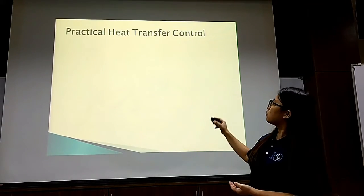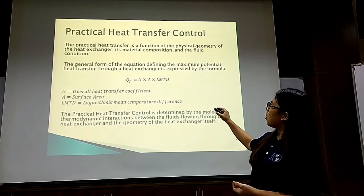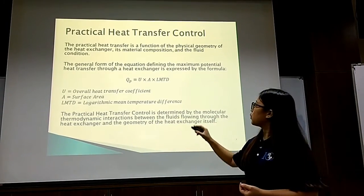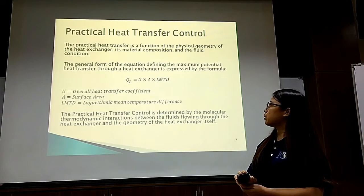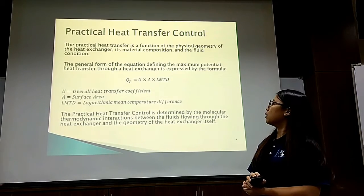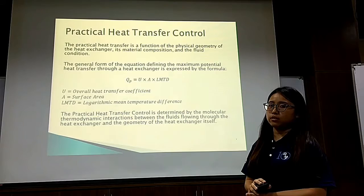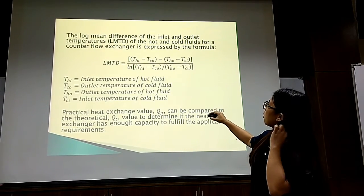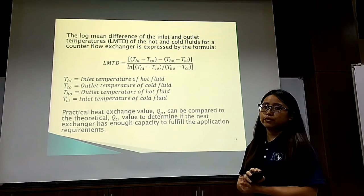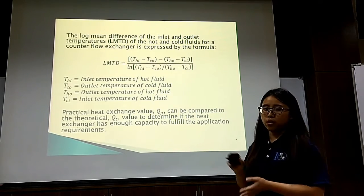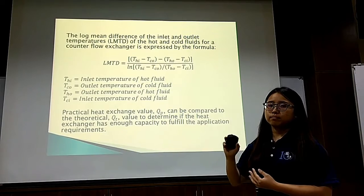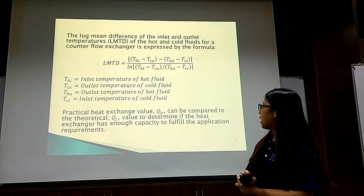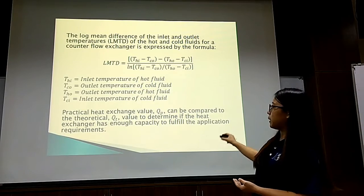The practical heat transfer equation is given by the formula: overall heat Q equals the overall heat transfer coefficient times the surface area times the logarithmic mean temperature difference. The logarithmic mean temperature difference formula is shown here. The difference between the practical and theoretical equations is used to determine whether the heat exchanger has enough capacity to fulfill the application requirement.